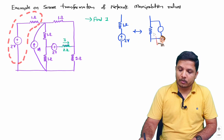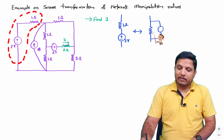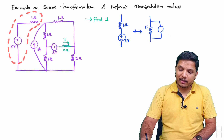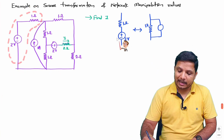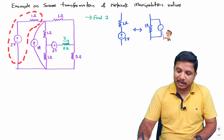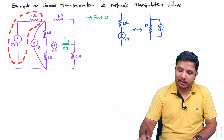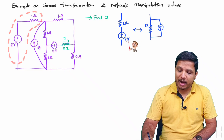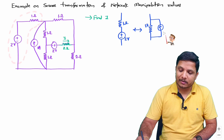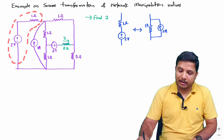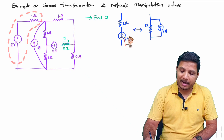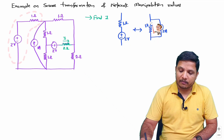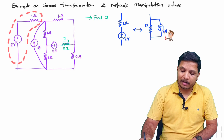In the current source equivalent, it will be in parallel with the resistor. The resistor value will be 1 ohm. The direction of the current source is from minus to plus — that is, in the upward direction. I equals V divided by R, so 2 divided by 1 equals 2 amperes.